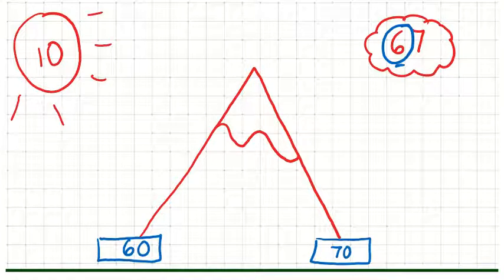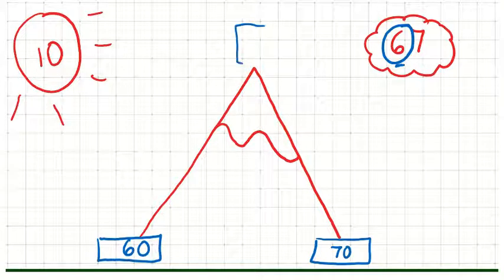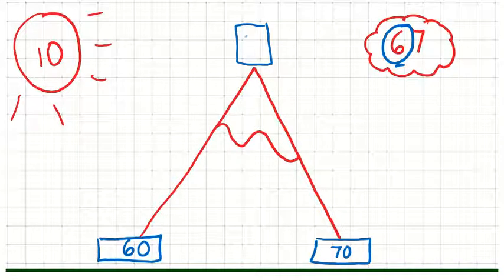I then want to work out what would be at the top of the mountain, which is halfway in between 60 and 70. So halfway between 60 and 70 is 65.